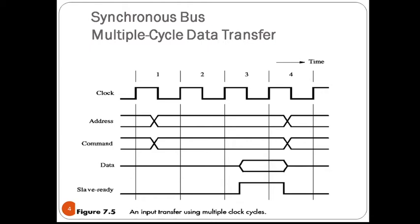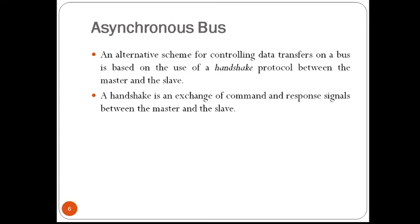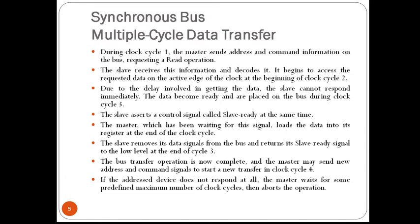If the addressed device is not responding at all, the master waits for some predefined maximum number of clock cycles and then aborts the operation. This could be the result of an incorrect address or a device malfunction. It should be noted that the clock signal used on a computer bus is not necessarily the same as the processor clock — it is often much faster because it controls internal operations on the processor chip. Delays encountered by signals internal to a chip are much less than on a bus interconnecting chips on a printed circuit board.